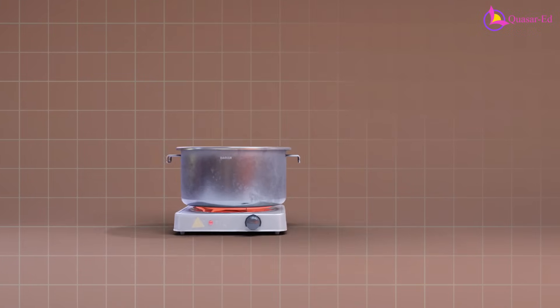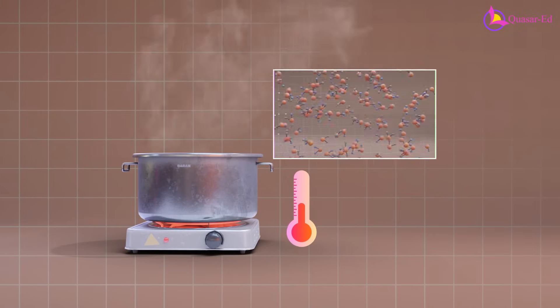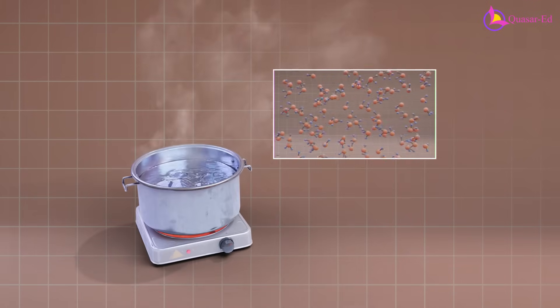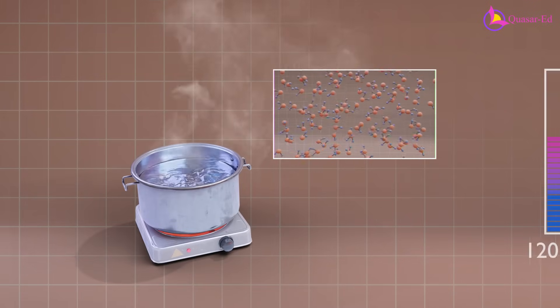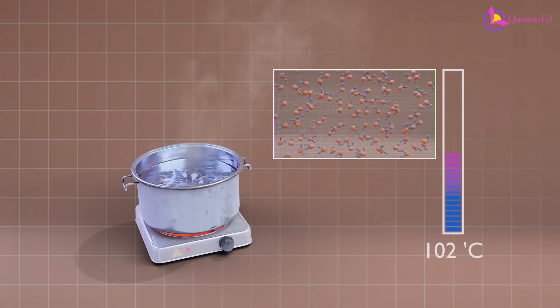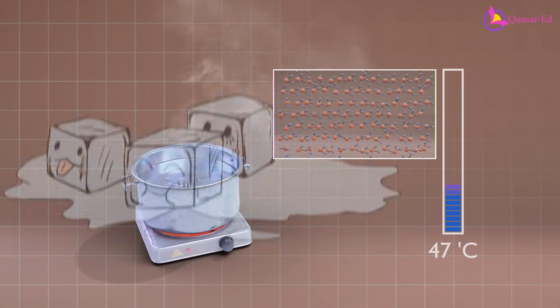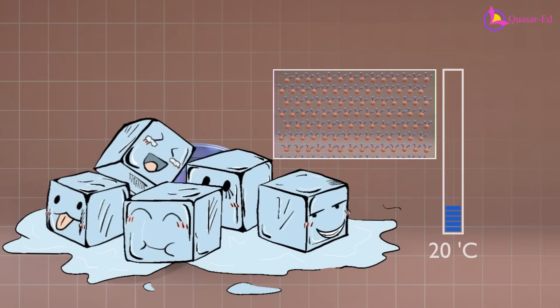Heat in an object comes from the vibration of its atoms and molecules. You can observe these vibrations in boiling water or rising steam. When heat decreases, these vibrations slow and the atoms eventually freeze in place, forming ice.